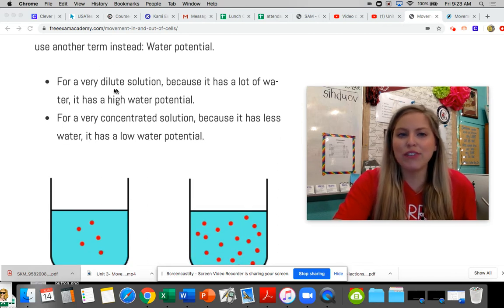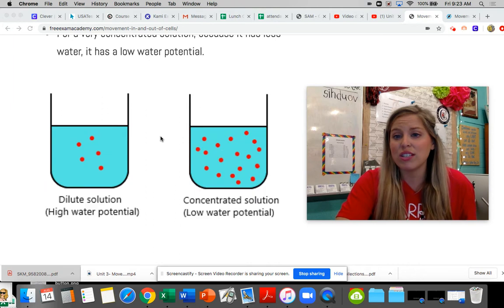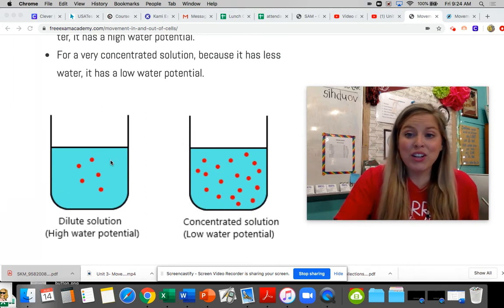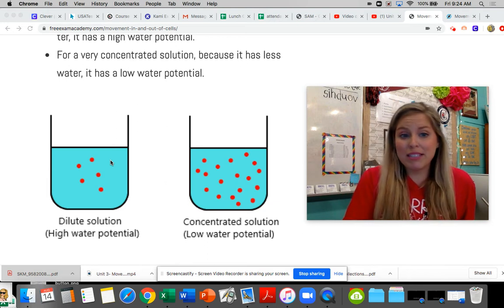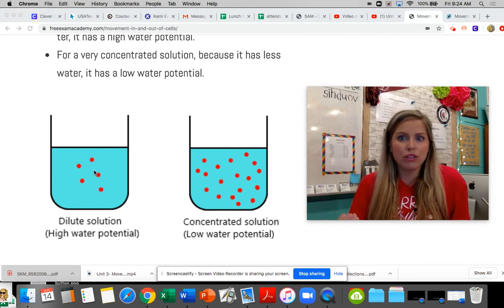So let's look at an image that we can start talking about what it means when you see the phrase a dilute solution and a very concentrated solution, because these terms are going to come up on test questions. Now, when we talk about in terms of water potential, a dilute solution is going to have a high water potential. There's more water in it. It's more diluted.